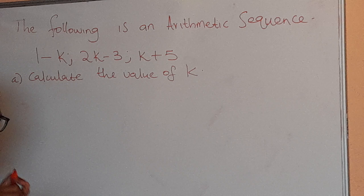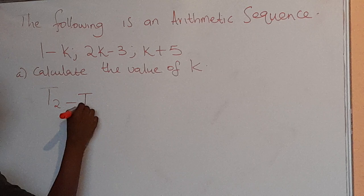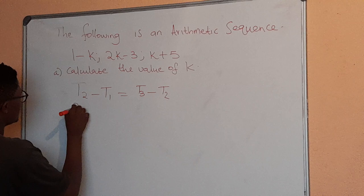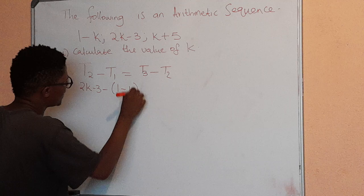Here's the formula, t2 minus t1 equals to t3 minus t2. What is our t2? It's 2k minus 3 minus t1, which is 1 minus k inside the brackets,